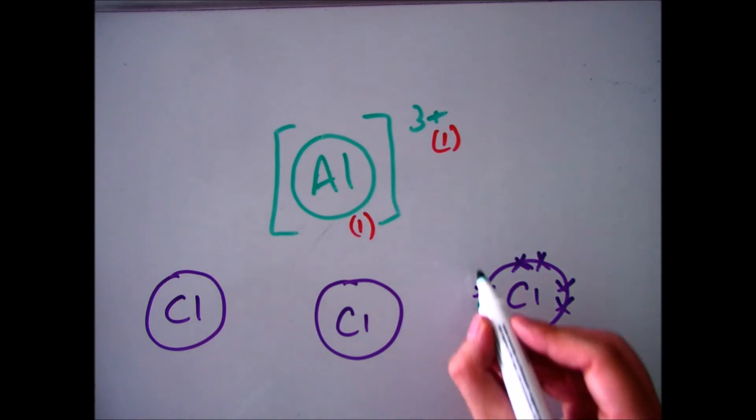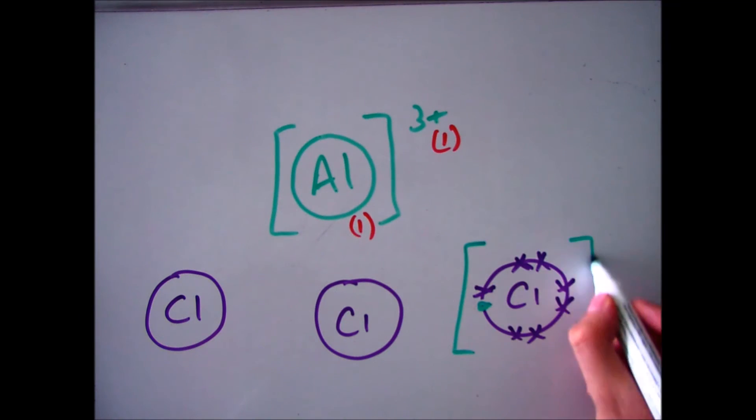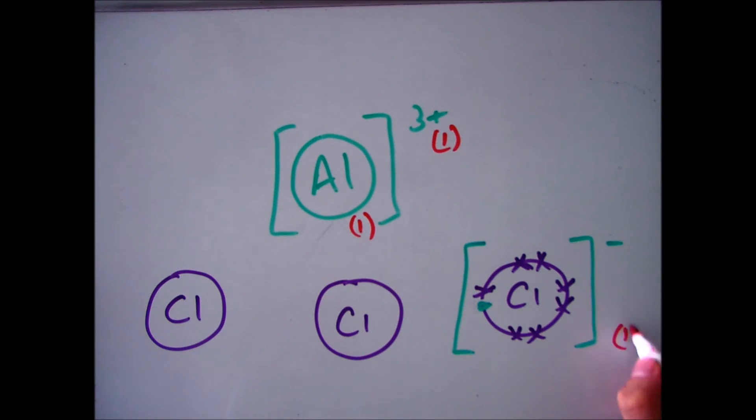The first mark will be for getting one of those correct, so draw your chlorine with seven electrons on the outer shell, and then put one in from your aluminium. This will give you chlorine in a bracket with a negative charge. So that is your third mark out of four.